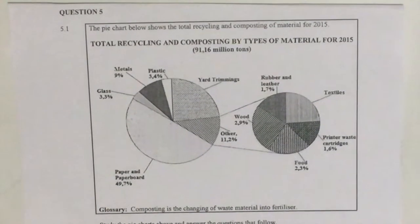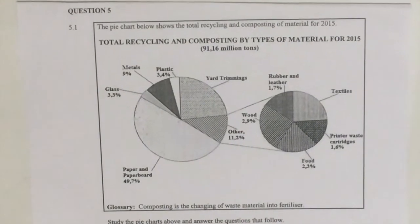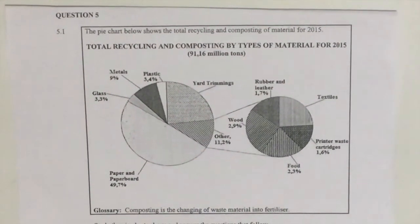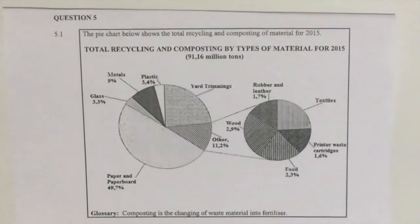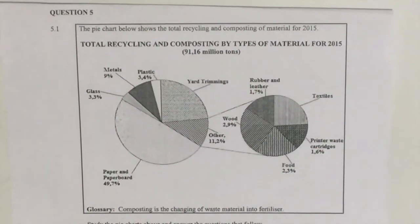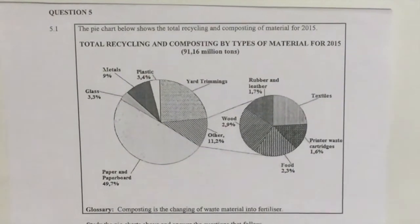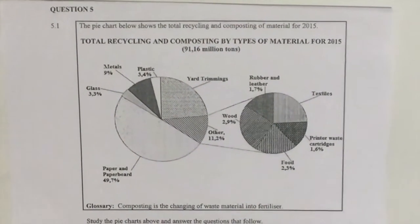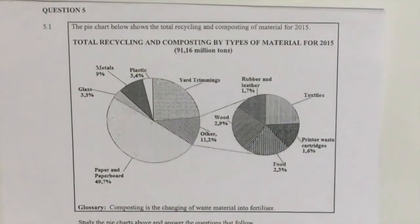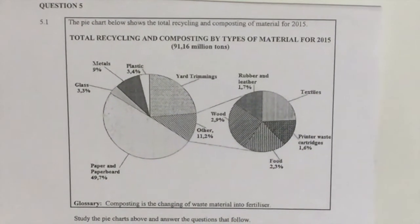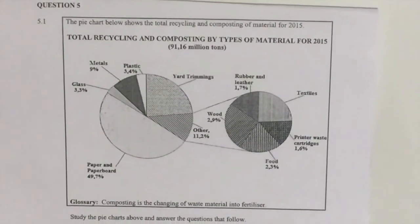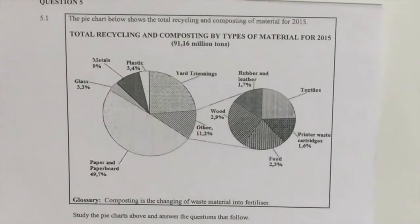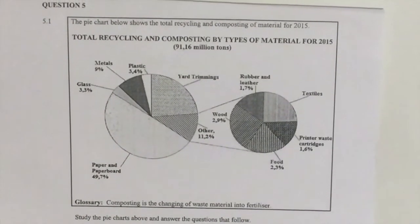Hello everyone. This is a lesson on data handling, and particularly we're going to look at one kind of graph: the pie chart. A pie chart — like the way it says 'pie' — is usually round. They took the name from there. The pie chart is 100 percent, and then they cut the pie according to how much each section weighs.